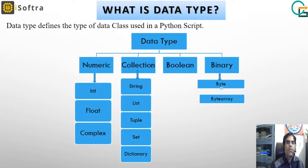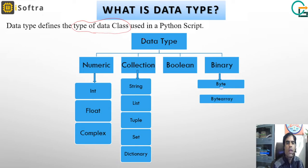First, we will discuss what is a data type. A data type in Python defines the type of the data class, because in Python everything is based on an object-oriented approach. In object-oriented programming, we use classes and objects. We can categorize data types in Python as: numeric type, collection type, boolean type, and binary type.